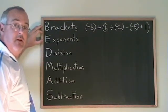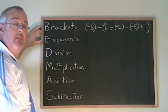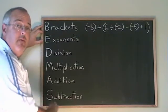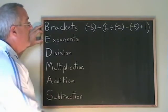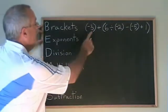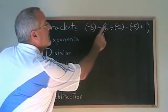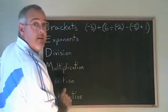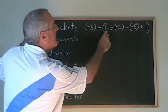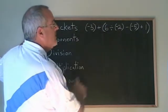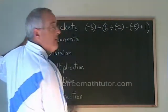Once we start studying integers, we eventually have to be able to do BEDMAS problems involving integers. Here's an example: we have -3 plus, and then we have a large bracket. Inside the bracket, 6 divided by -2 minus -5 plus 1.